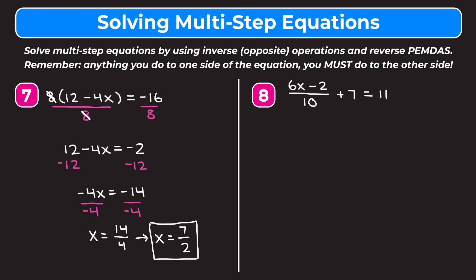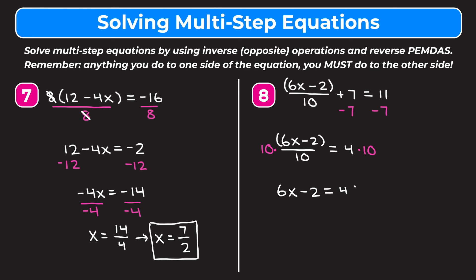Now for the last example: the quantity of 6x minus 2 divided by 10 plus 7 equals 11. I'll put in parentheses around the numerator. Reverse PEMDAS tells us to get rid of the 7 being added first, so we subtract 7 from both sides. The 7s cancel, leaving 6x minus 2 over 10 on the left. On the right 11 minus 7 is 4. Now we get rid of the 10 being divided by multiplying both sides by 10. The 10s cancel, leaving 6x minus 2 on the left. On the right 4 times 10 is 40.